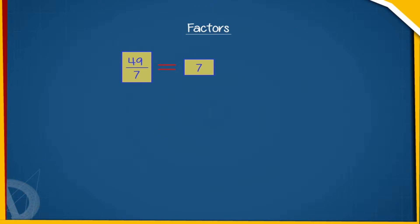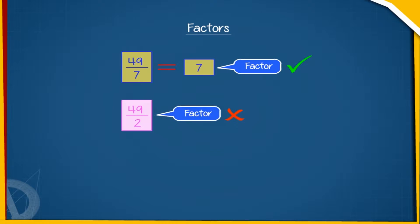...a factor of a given number is the number that divides the given number exactly without leaving any remainder. If a number does not divide the given number completely, it is not a factor of that number.